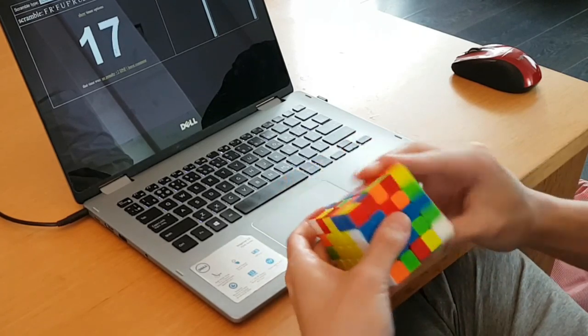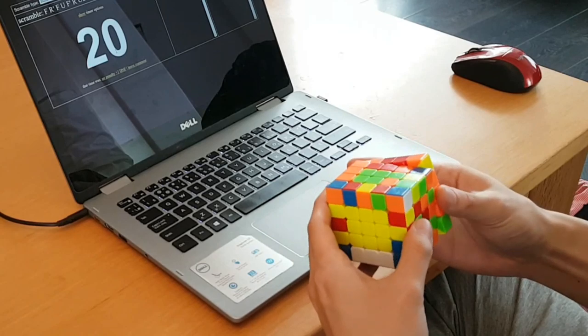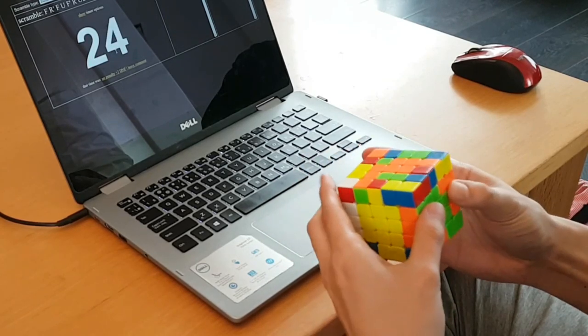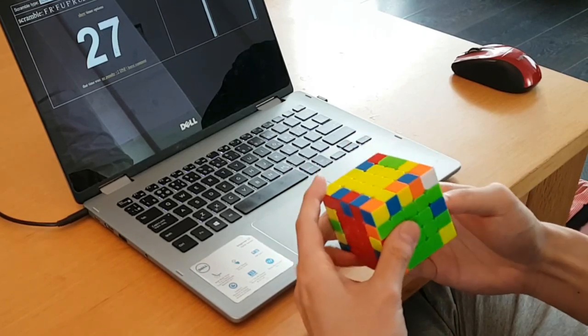So I don't know if this will be my main, but it looks like it's going to get me faster than the Aochuang GTS, because I'm already averaging about the same, and I'm not used to it yet. And that's normal for a new cube, especially when I've been using another cube for such a long time.